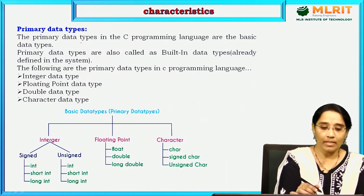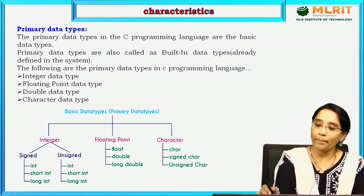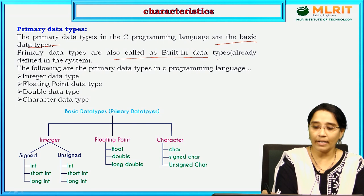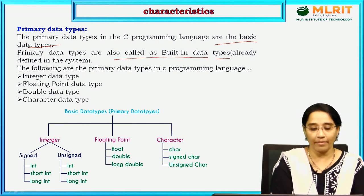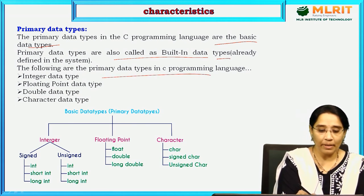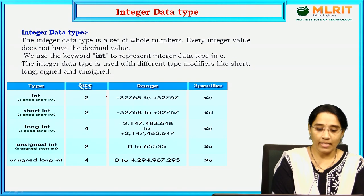Primary data types in the C programming language are the basic data types. Primary data types are also called built-in data types, meaning they are already predefined. The primary data types in C programming language are integer, float, double, and character.